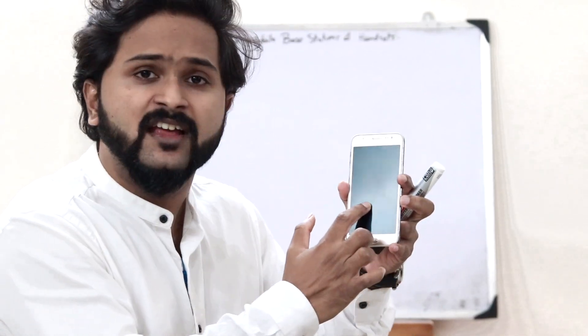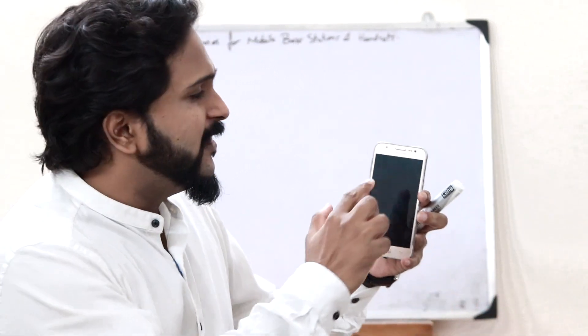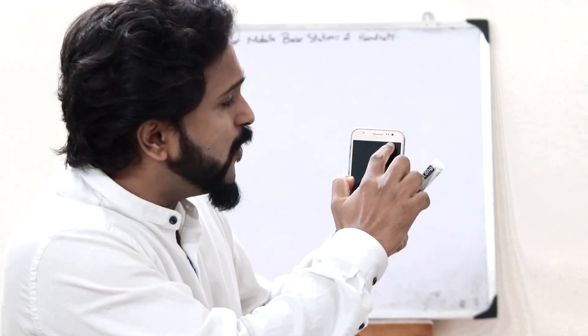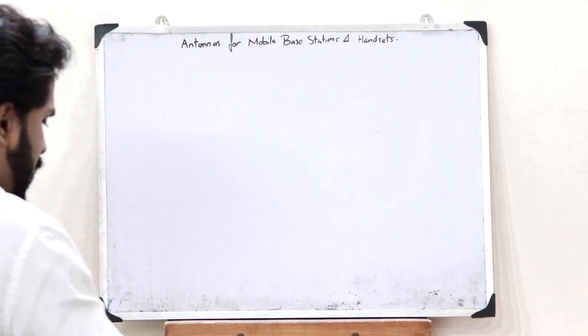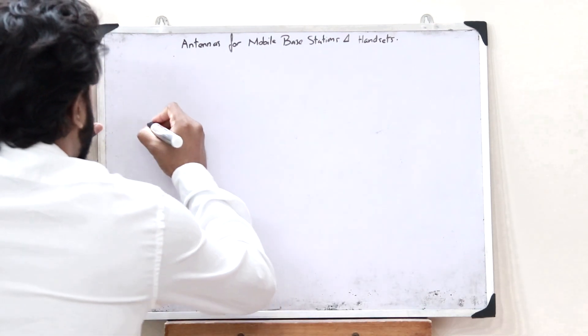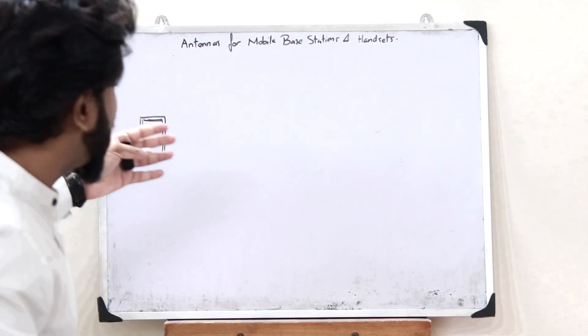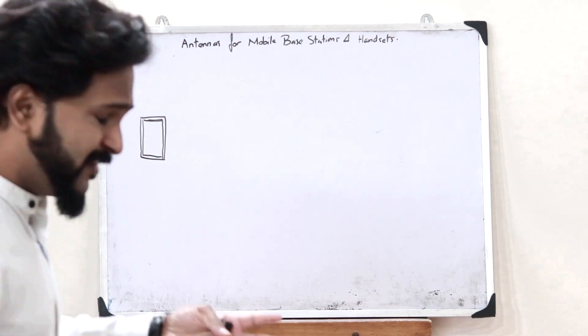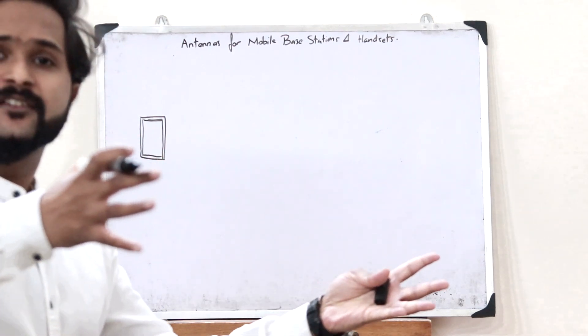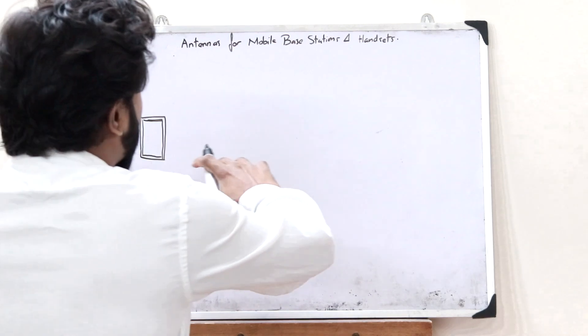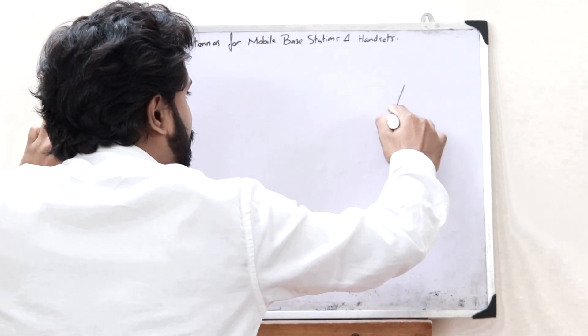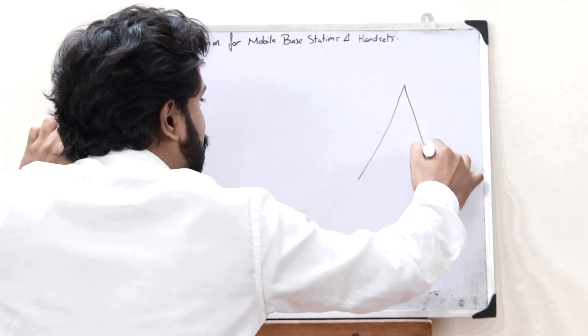To do these things, we have to have this handset connected to a particular network. The signal bars present on the phone signify the strength with which it is connected to a particular network. In a typical communication system, this smartphone must be connected to a base station or simply connected to a particular antenna like this.